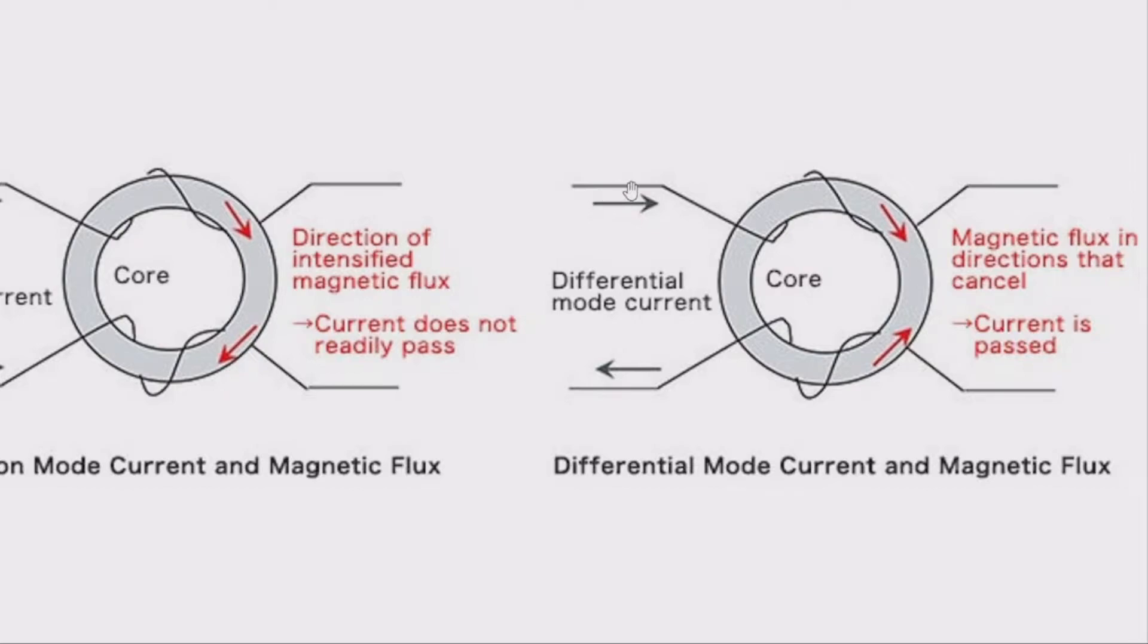The signal of 60 or 50 Hz comes through the line and it changes the polarity. Polarity always one to one side and another to the other side in the wires. And the magnetic flux cancels each other.